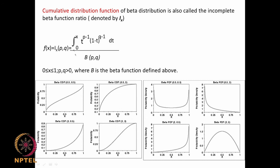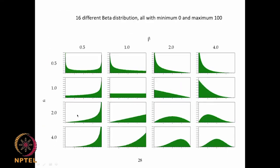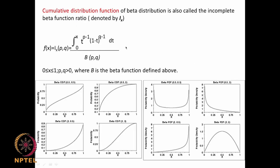There is also a cumulative distribution function (CDF) for the beta distribution, obtained by integrating the PDF from 0 to x. It is given using the beta function B(α,β), which equals Γ(α)Γ(β)/Γ(α+β). For example, if your PDF looks like a bell shape (alpha=2, beta=2), the cumulative will rise in an S-shape from 0 to 1. The CDF equation is useful because it gives you the probability of x being at most some value.